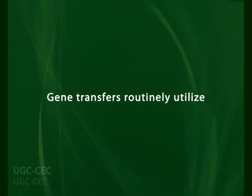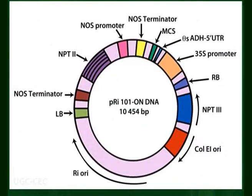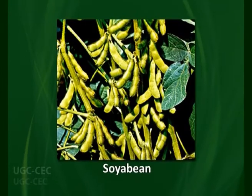Gene transfers routinely utilize disarmed plasmid Ti and plasmid Ri. But in some plant species, for example soybean, the efficiency of transformation by disarmed pTi is much lower than that by wild-type pTi. With this realization, it is a simple step to envision how to deliver genes of interest into a plant.